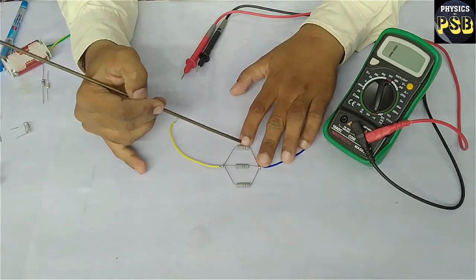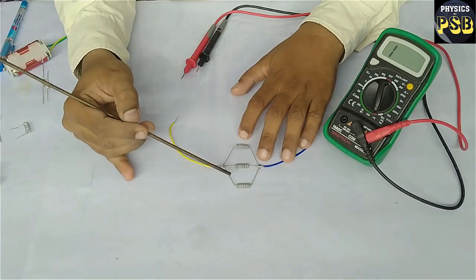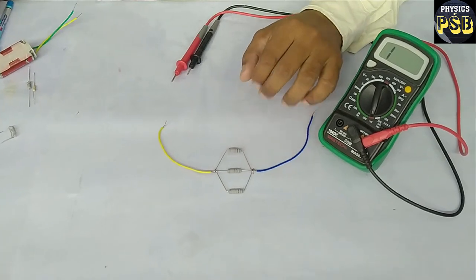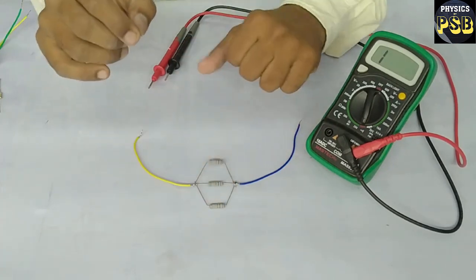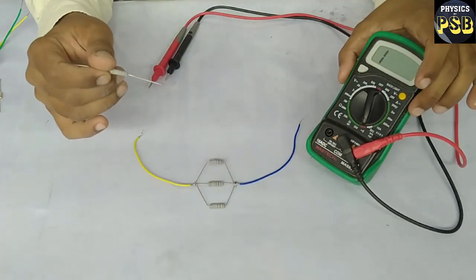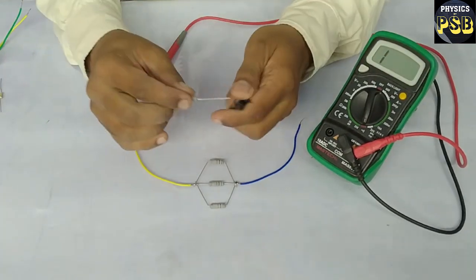Here I have taken three resistors, each having resistance equal to 1000 ohms. I have connected them in parallel. Now I will check the resistance of a similar type of resistor with the help of a multimeter.